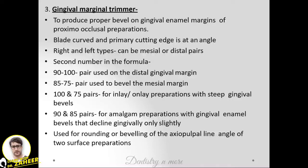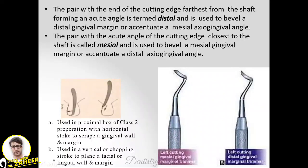The gingival marginal trimmer (GMT) is a very commonly asked short note. It is used to produce a proper bevel on gingival enamel margins of proximal-occlusal preparations. The blade is curved and the primary cutting edge is at an angle. There are right and left types for mesial and distal sides. In the instrument formula: a second number of 90–100 is used for the distal marginal or gingival margin; 85–75 for the mesial margin; 100 and 75 for inlay/onlay preparation with steep gingival bevel; 90 and 85 for amalgam preparation with gingival enamel bevel declining gingivally.